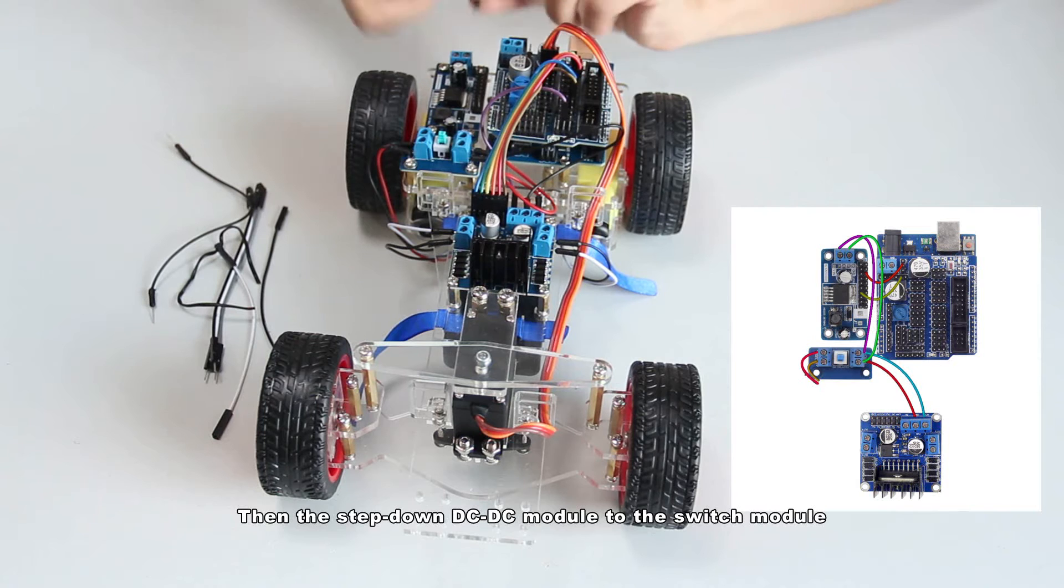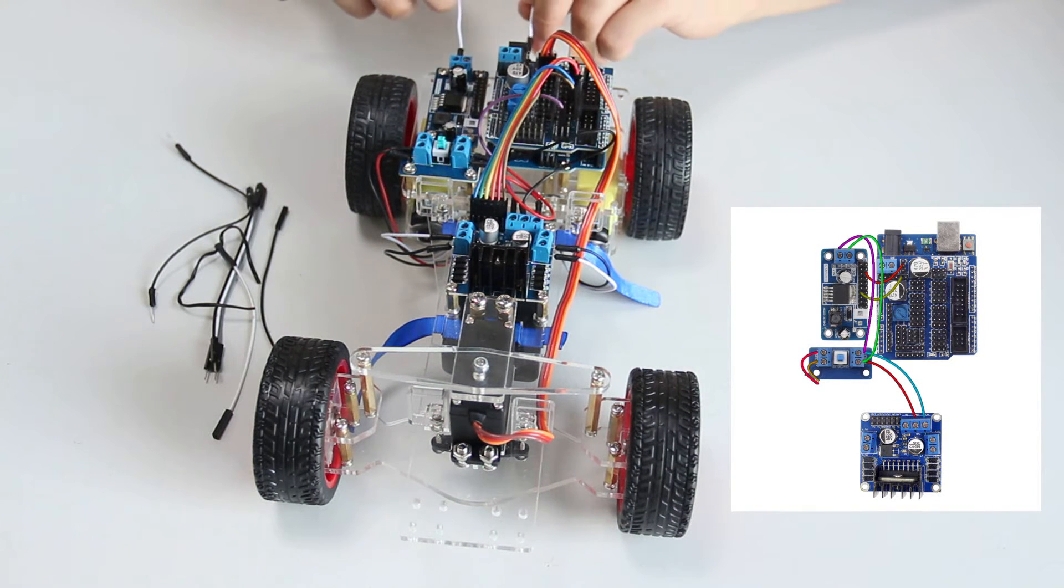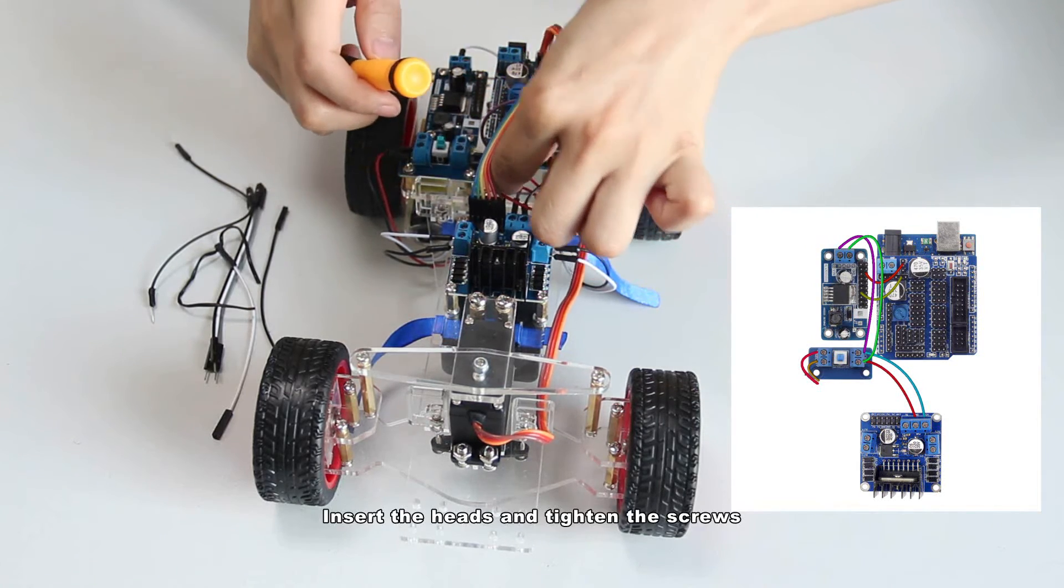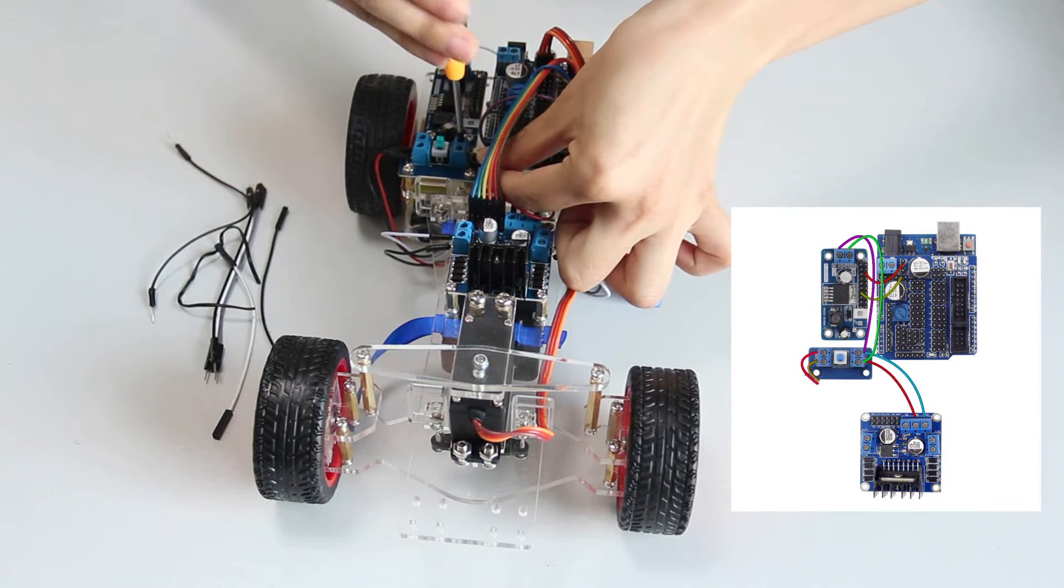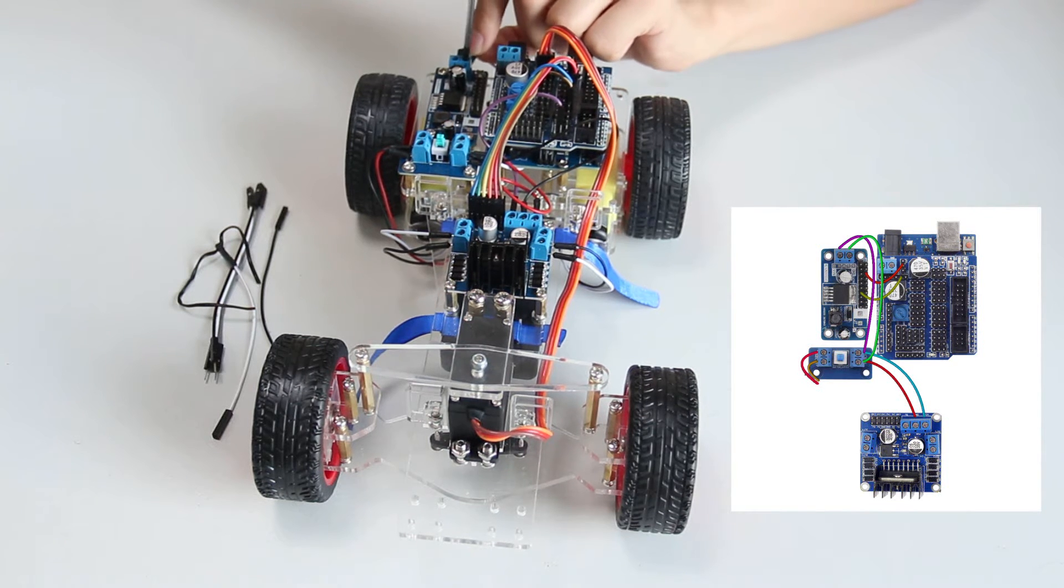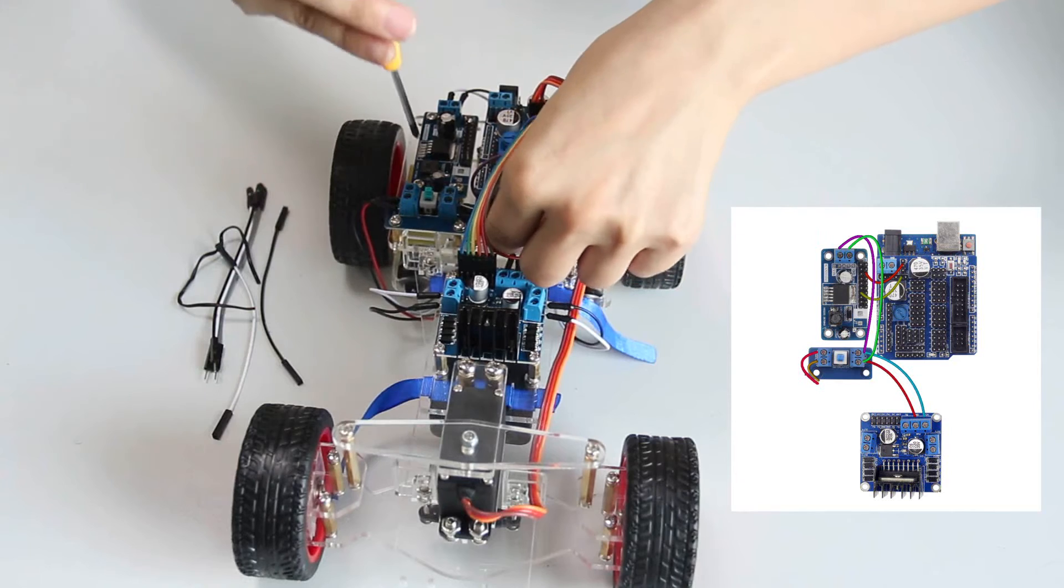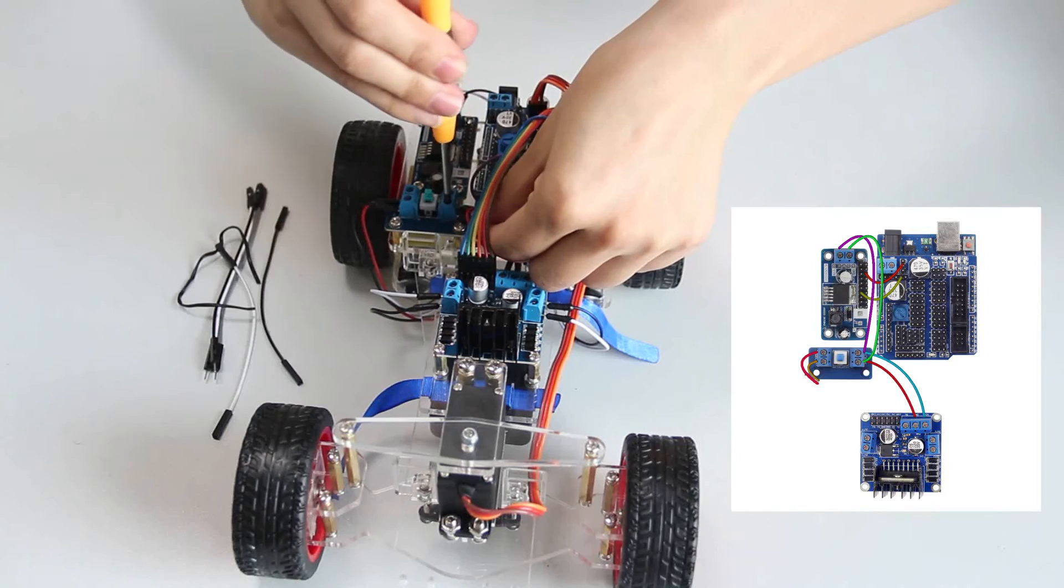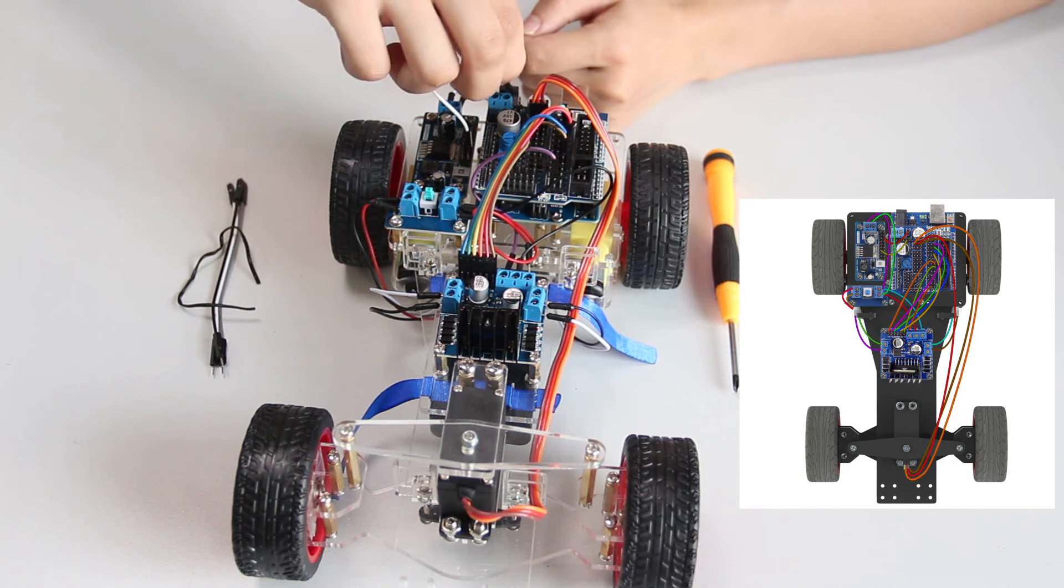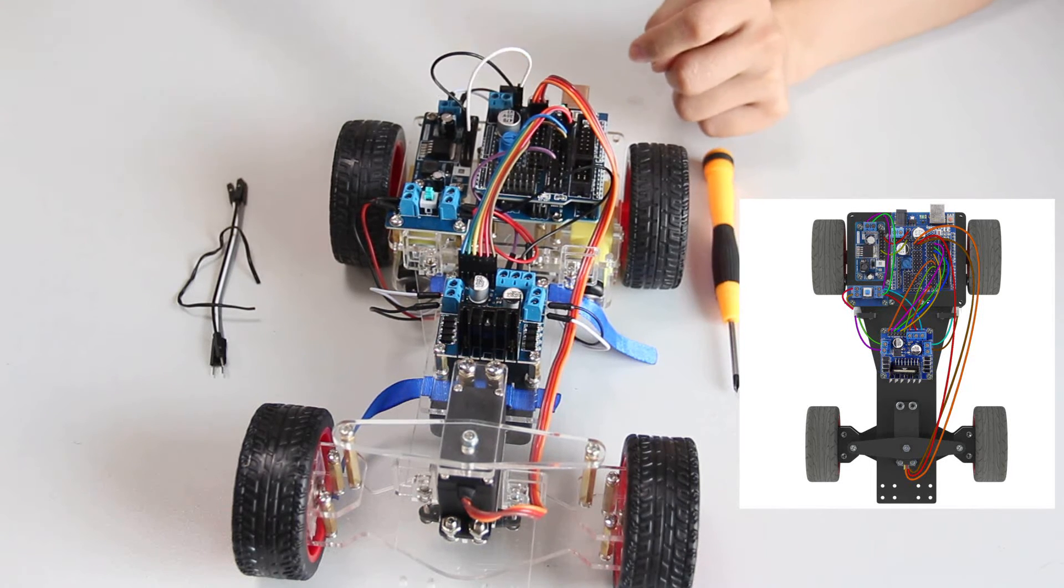Then the step-down DC to DC module to the switch module. To organize the wires, pull the wire below the top plate, insert the heads and tighten the screws. Now the wiring is done.